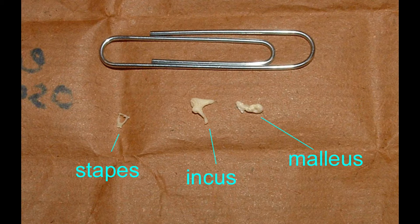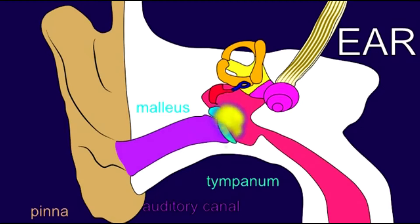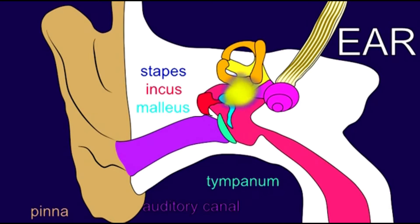The middle ear includes three tiny bones: the malleus, the incus, and the stapes, which amplify the vibrations of sound. These are located within the temporal bone.